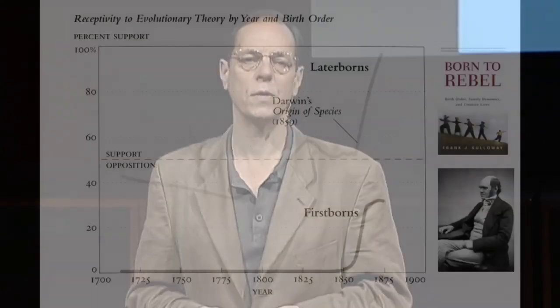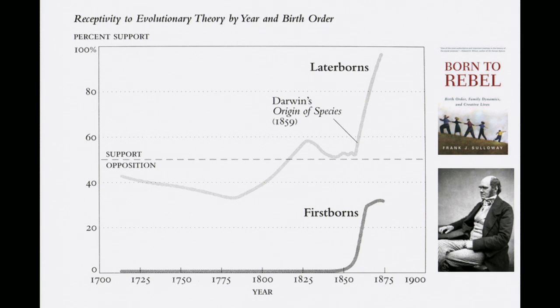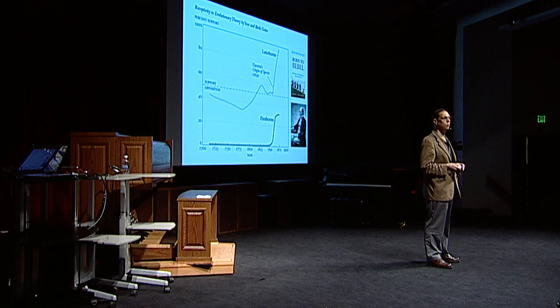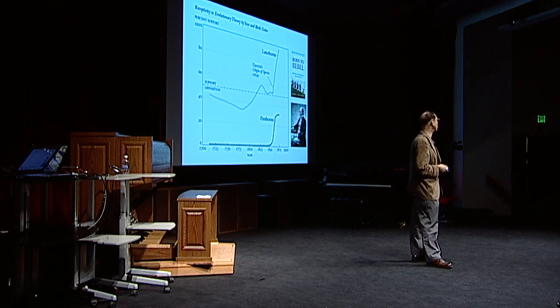I wrote a book called Born to Rebel, which was a survey of more than 100 different historical events in Western history, looking at whether younger siblings would be more likely to support radical revolutions of any kind. I reviewed a large number of revolutions in the history of science, including the Darwinian revolution. For about 150 years before Darwin published The Origin of Species, younger siblings were consistently more likely to support various theories of evolution, at a time when not a single firstborn voiced support for those theories. Darwin himself was the fifth of six siblings. Alfred Russell Wallace, who co-discovered natural selection, was also the fifth of six siblings. All of these statistics are corrected for the fact that there are more younger siblings in the population.